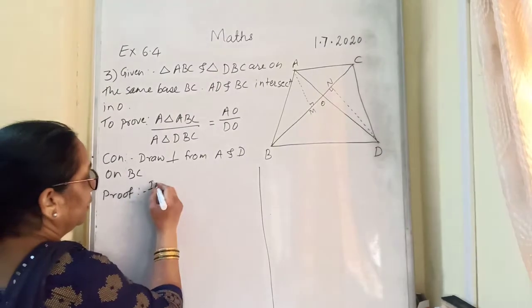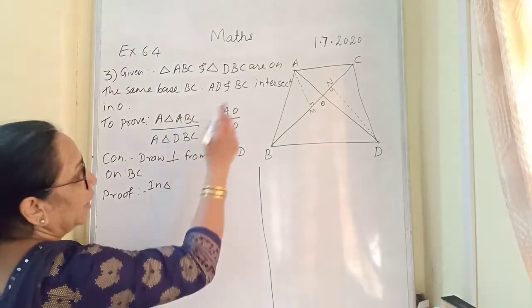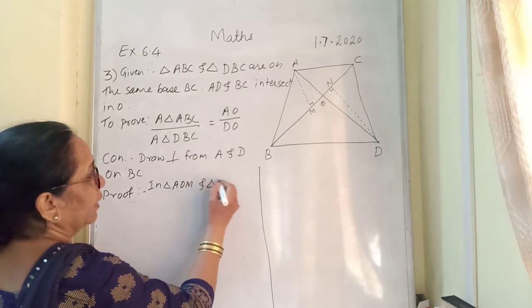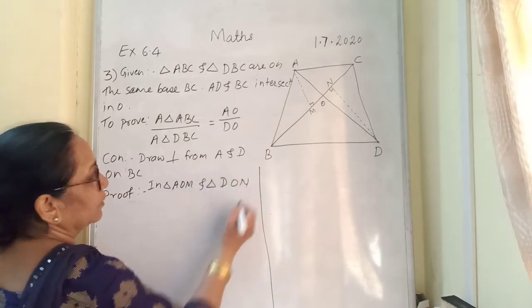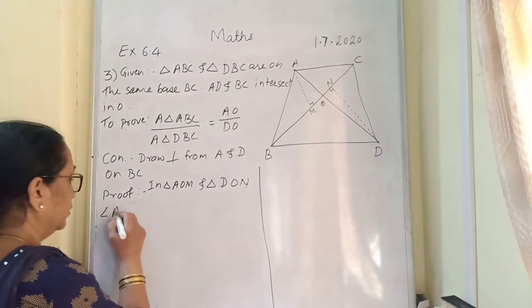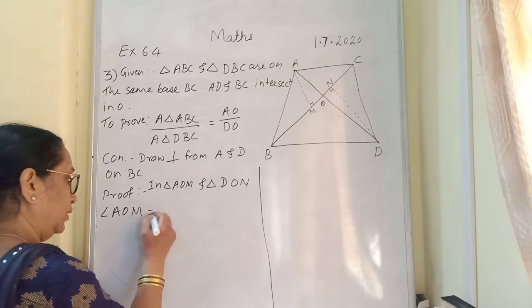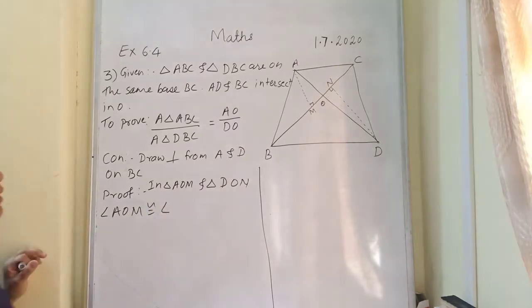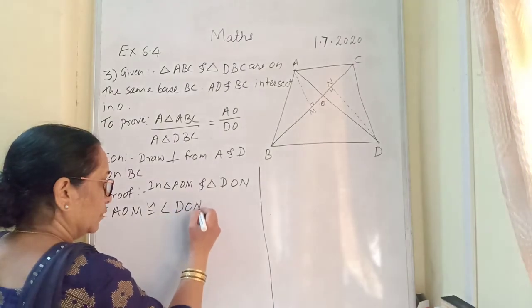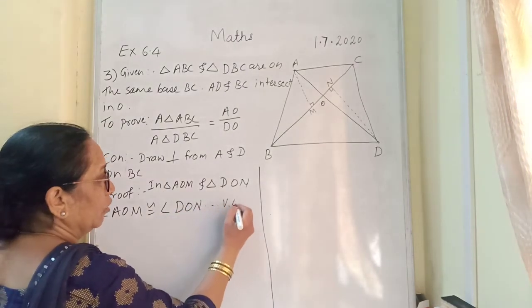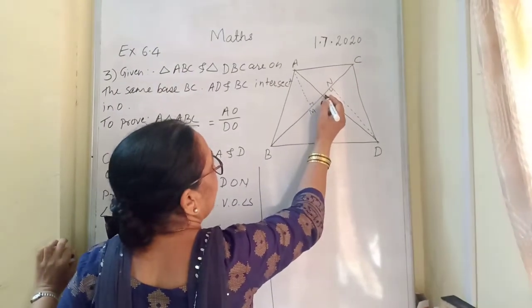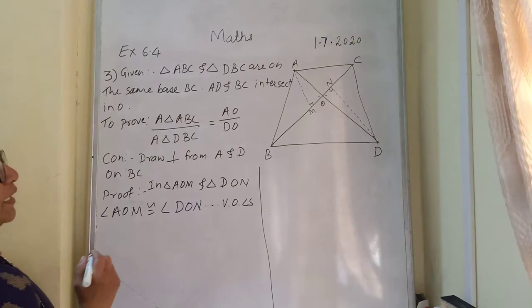In triangle AOM and triangle DON, correct, angle AOM is congruent with angle DON. And reason, reason will be vertically opposite angles. So this angle and this angle are congruent with each other. Vertically opposite angles.